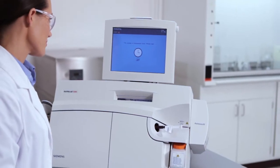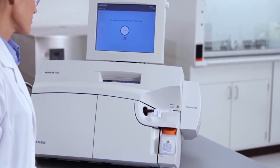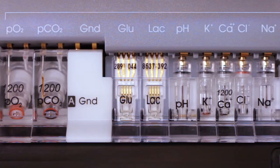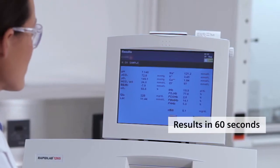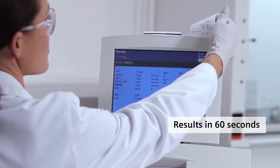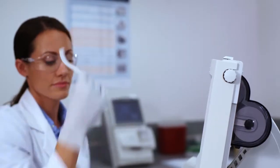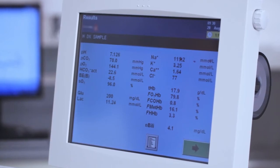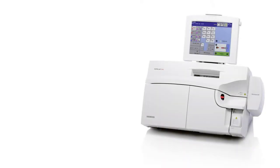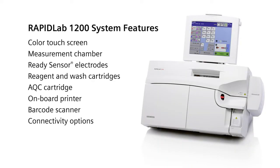Heparinized whole blood is automatically aspirated for analysis. The blood is clearly visible in the measurement chamber so the operator can monitor sample integrity. Results are displayed and printed in 60 seconds and if connected, are automatically sent to the LIS or the Siemens Healthineers point-of-care informatics solution. Let's take a closer look at the RapidLab 1200 blood gas system to better understand its unique features.